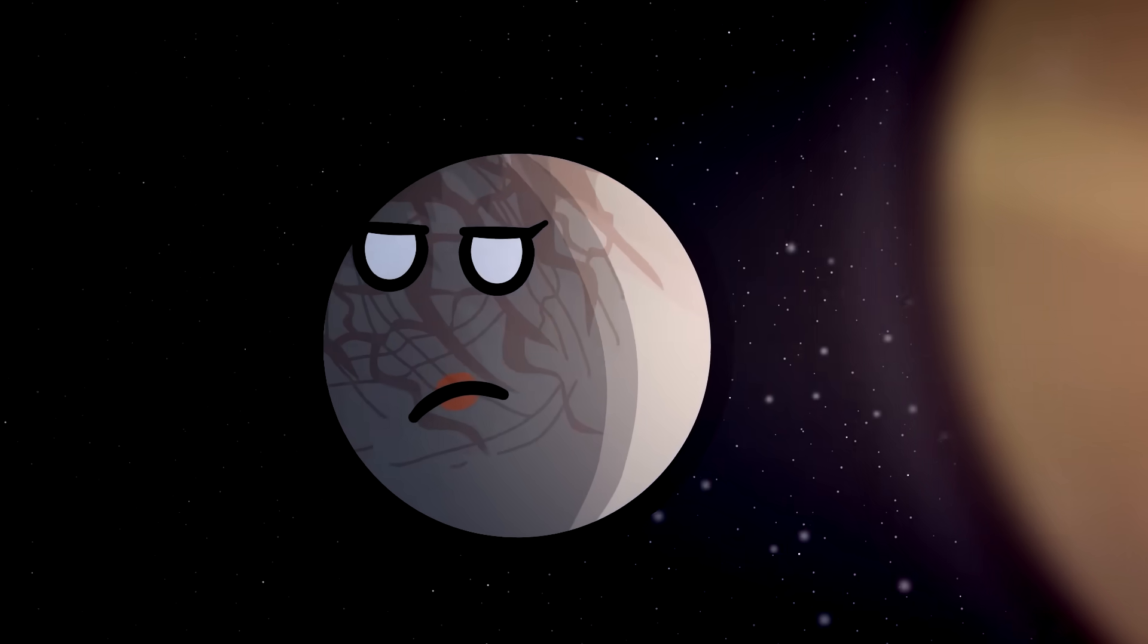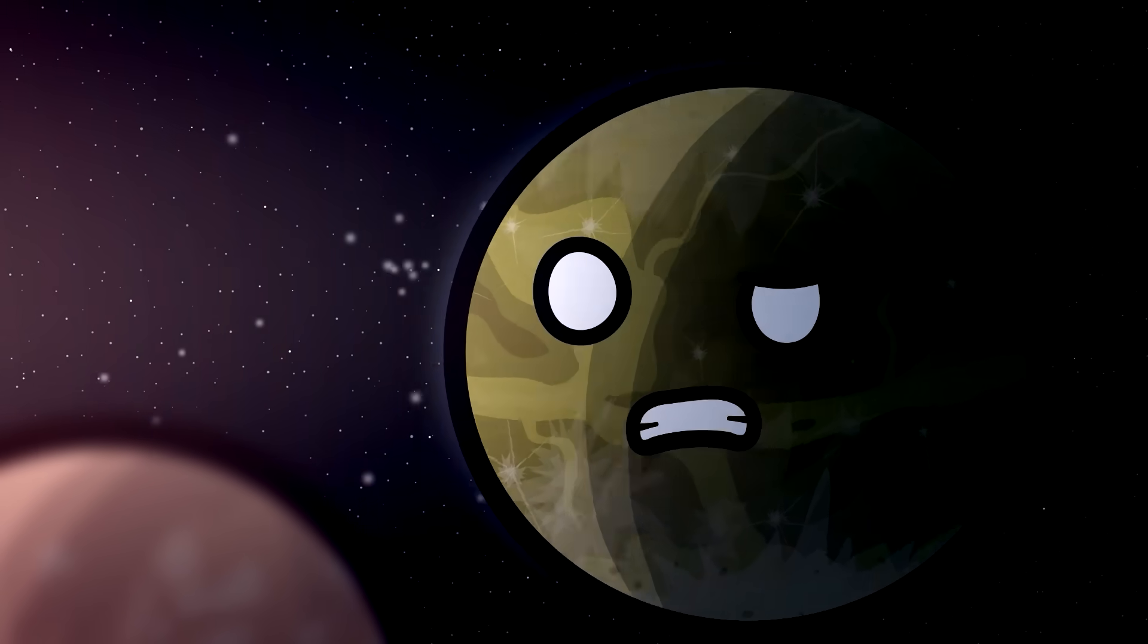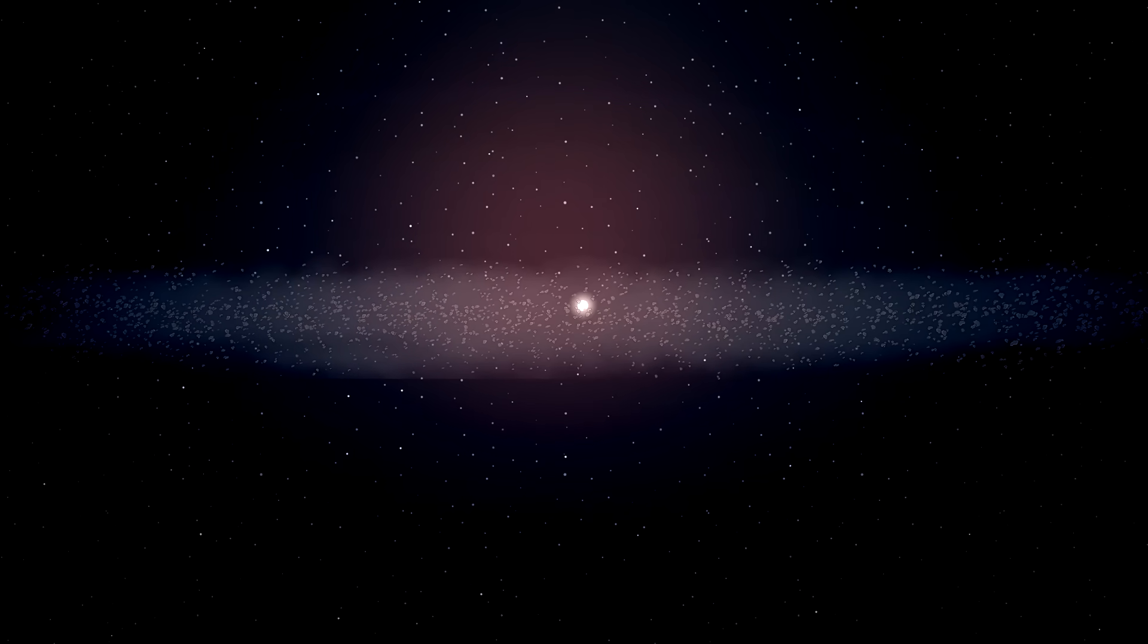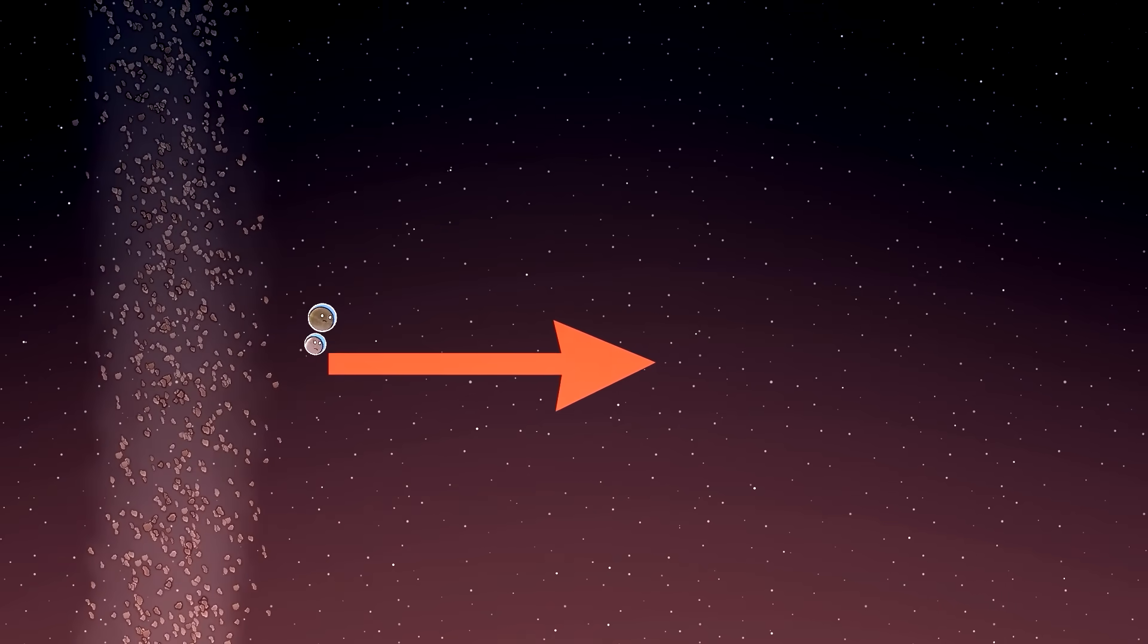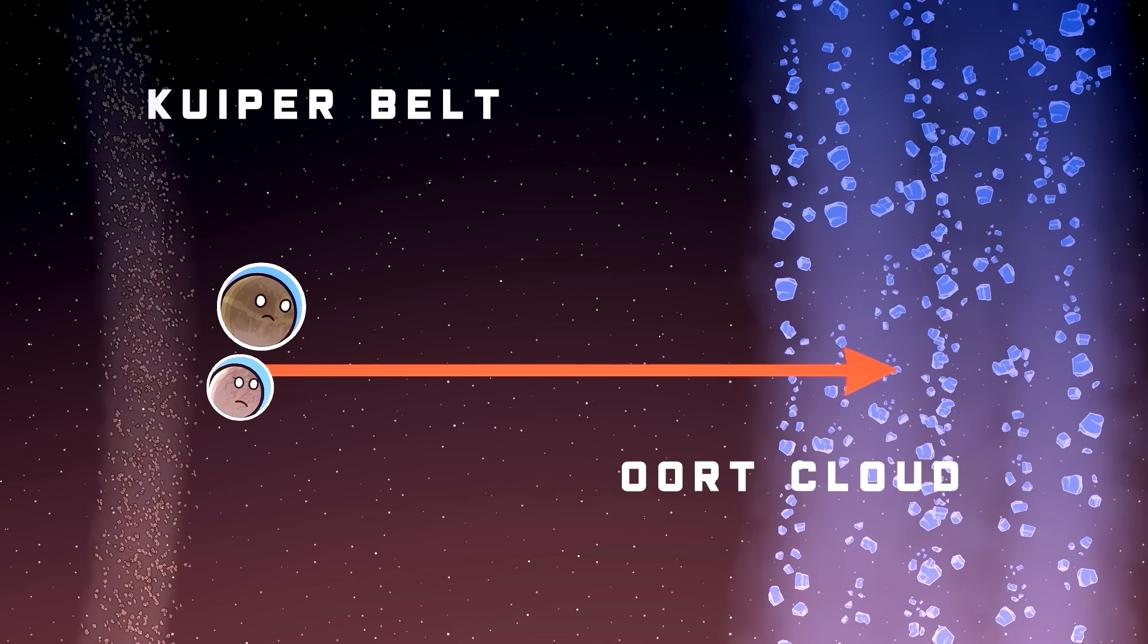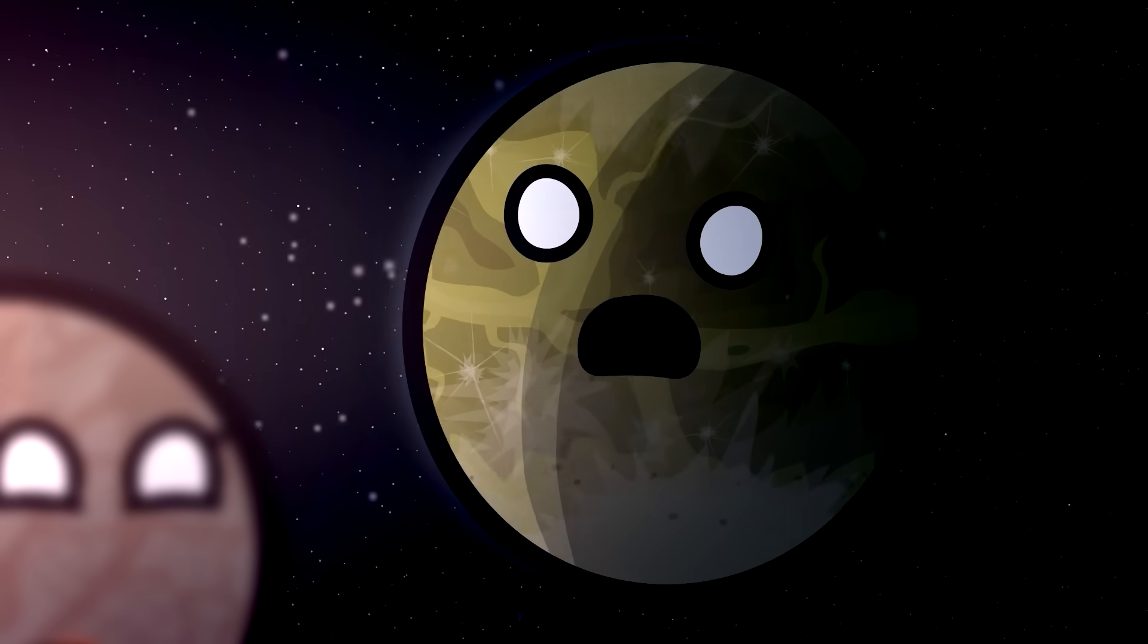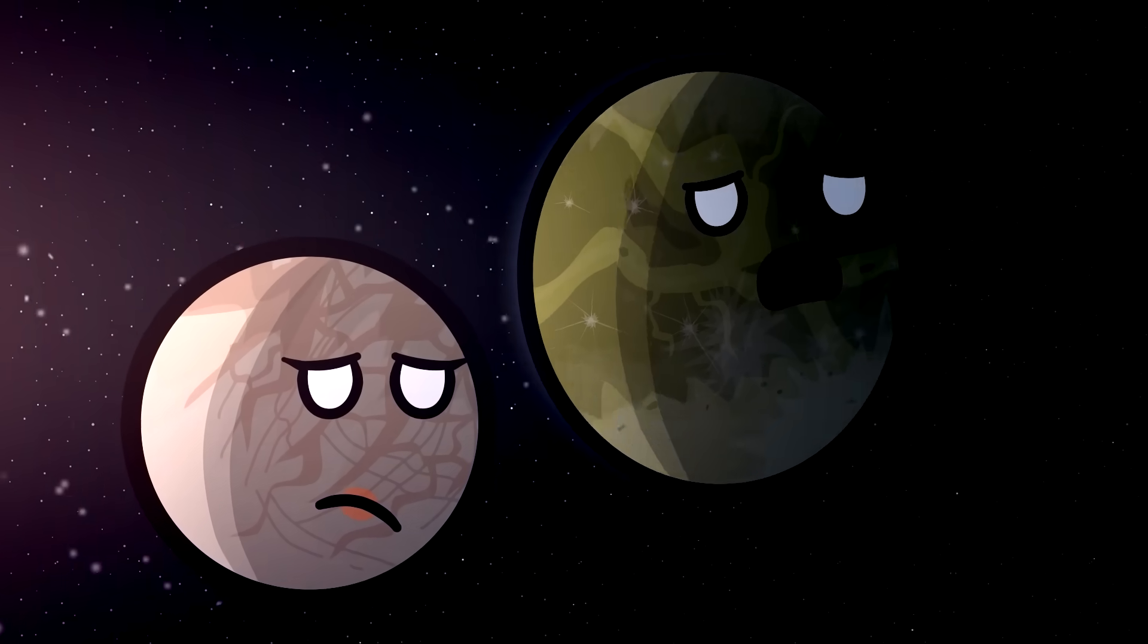Anyways, we're already out of the solar system, so... Not quite, Ganymede. What? But we just left the Kuiper Belt. Isn't that the end of the solar system? Nope. After that comes a lot of empty space, followed by the Oort Cloud, which is super big. And then? A lot of empty space.